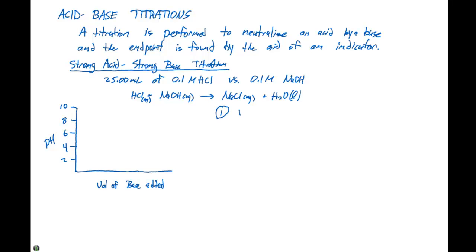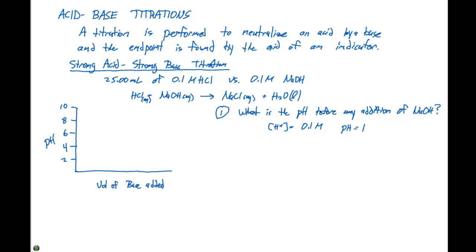Point number one: what is the pH before any addition of NaOH? Our concentration of H⁺ in this case is going to be 0.1 molar. And that means if we take the negative log of that, our pH is going to equal 1. So before any base is added, our initial pH on this curve is going to be 1. At zero volume of base added, we have a pH of 1.